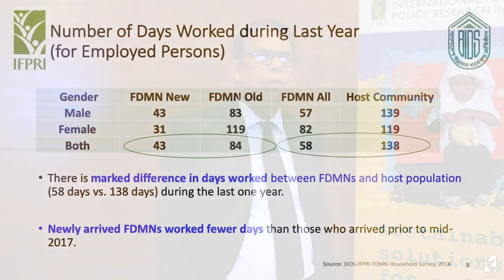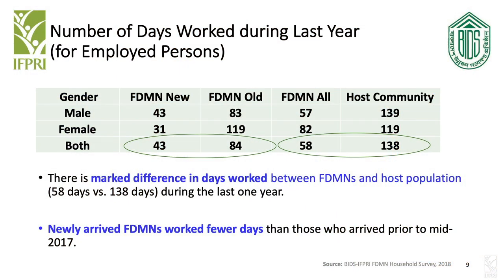This shows the difference in number of days worked over the last one year. There is a marked difference between the host community and the FDMNs: when FDMNs worked only 58 days during the last year, the host community worked for 138 days. Between the new and old waves, we found that FDMNs in new camps worked fewer days than those in older camps.